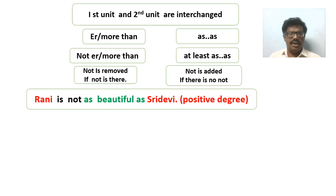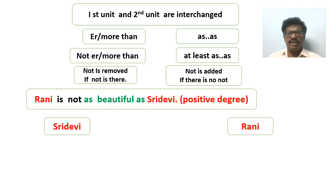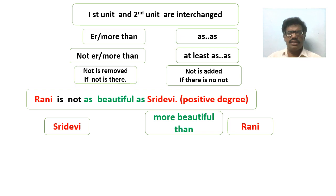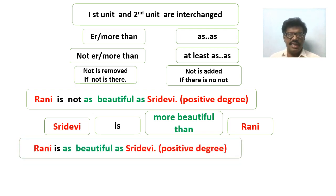Here is one more example. 'Rani is not as beautiful as Sri Devi' — it is in positive degree, we have to change it into comparative degree. First, interchange the units: Rani is brought here, Sri Devi is brought here. In the question there is 'as...as', so we write 'than' — we have written 'more beautiful than'. In the question there is 'not', so we remove 'not'. The answer is: 'Sri Devi is more beautiful than Rani'.